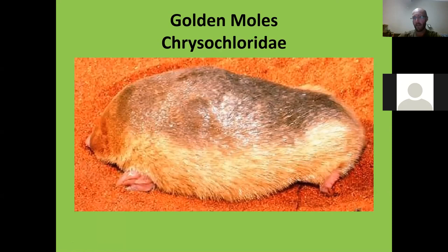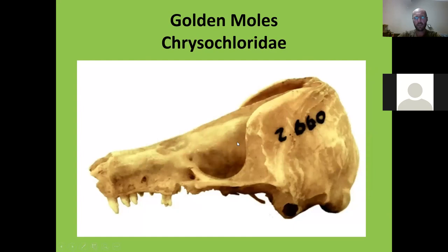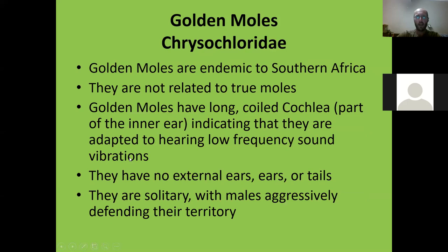Golden moles are ecologically adapted to a desert-like environment, much like the Australian marsupial moles, whereas true moles from Europe tend to be more temperate. Looking at the skull: very undeveloped eyes, very underdeveloped skull, small cranium, quite robust with a long rostrum, a very good sense of smell, and sharp needle-like teeth with almost no molars — because they're mostly eating invertebrates, insects, and earthworms that don't need to be ground down.